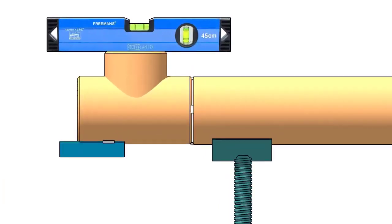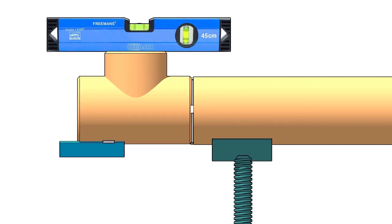The size of the angle cleat may vary according to the size of the elbow. Here I am using a 50-50 angle because the pipe diameter is 6-inch.